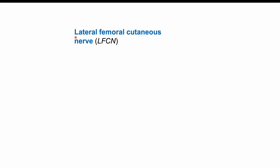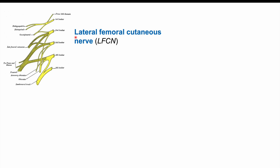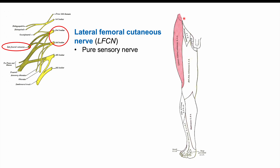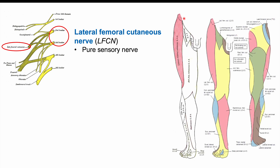Now let's talk about the anatomy and pathophysiology as to why this condition occurs. It all has to do with the lateral femoral cutaneous nerve. The LFCN originates from L2 and L3 — the second and third lumbar nerves of the lumbosacral plexus. The lateral femoral cutaneous nerve is a pure sensory nerve, meaning it is only involved in sensation and has no motor functioning. The LFCN is responsible for anterolateral thigh sensation.